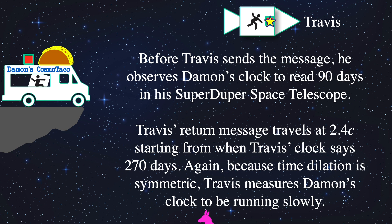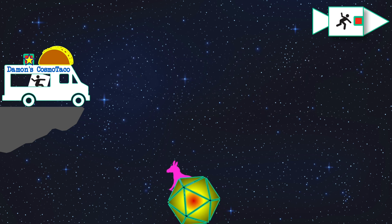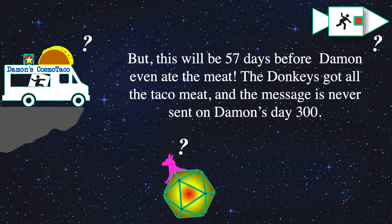Travis's return message travels at 2.4 times the speed of light away from him, starting when Travis's clock says 270 days. Again, time dilation is symmetric, therefore Damon's clock, according to Travis, looks like it's running slow in a telescope and reads 90 days. Travis calculates that the message going to Damon will arrive at the taco truck when Damon's clock reads 243 days. This will spare Damon all the distress of the bad tacos on Damon's day 300. But this is 57 days before Damon sent the first message. Therefore, Travis has warned Damon about the bad taco meat two months before he even eats it. I wouldn't worry about the donkeys. They've seen this kind of thing before, and they're always ready for tacos.